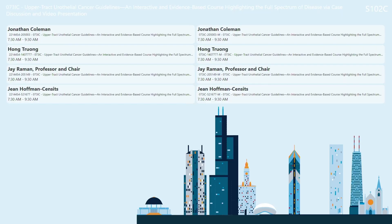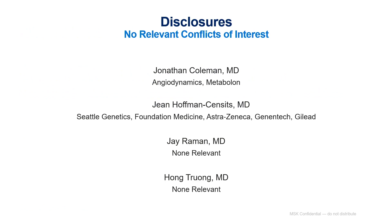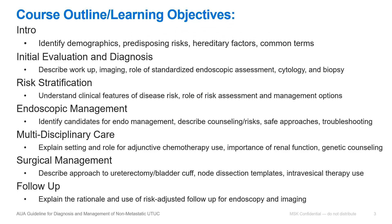Let's get started. This is designed to be minimally didactic — we really want to talk with you and share ideas. These are our disclosures, none relevant to today's talk. The course outline covers: a brief intro, initial evaluation and diagnosis of upper tract disease, risk stratification using the new process for upper tract, endoscopic management, multidisciplinary care including neoadjuvant and adjuvant chemotherapy, surgical management, and finally the new follow-up schedule for patients after management.